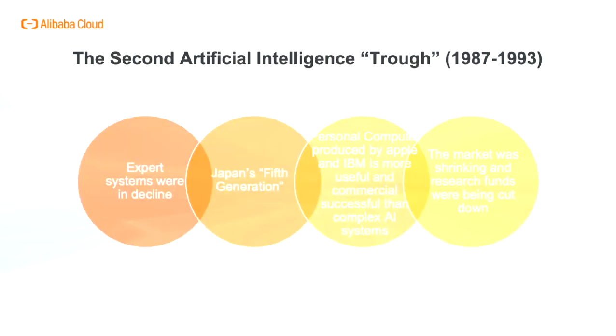The second cold winter of artificial intelligence was 1987 to 1993. Expert systems were declining because knowledge could not be expressed by experts by hand but required automatic learning. Japan's fifth generation project failed to meet its targets. Personal computers made by Apple and IBM were improving, and these computers, without using AI technology, performed better than the expensive LISP machines. As the market for AI hardware shrank sharply, research funds were cut back, and AI experienced its second cold winter.